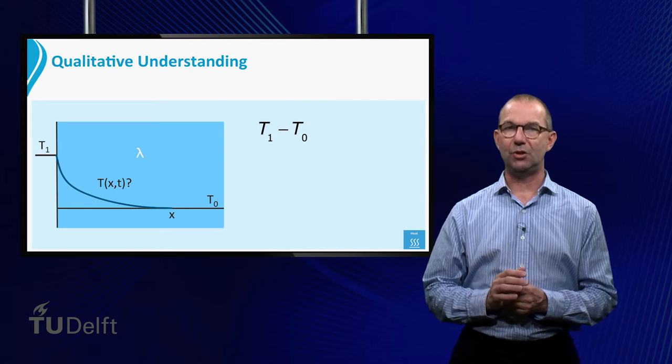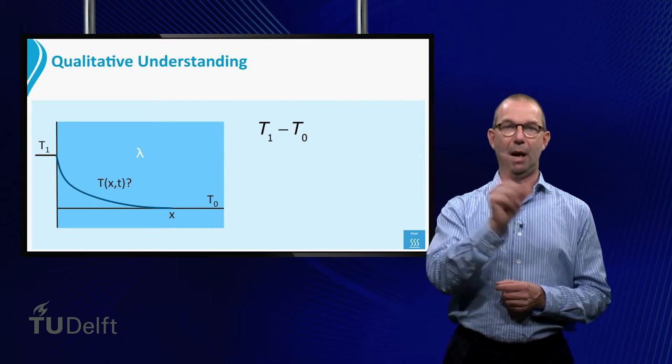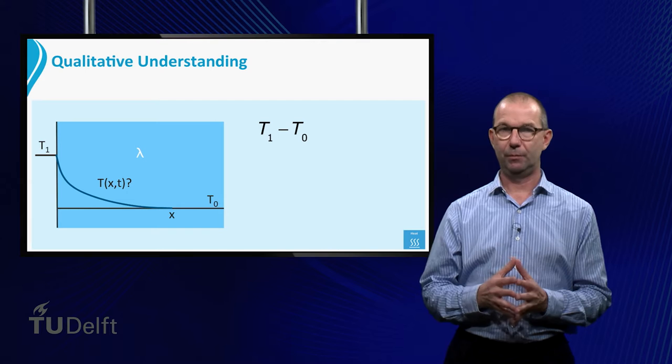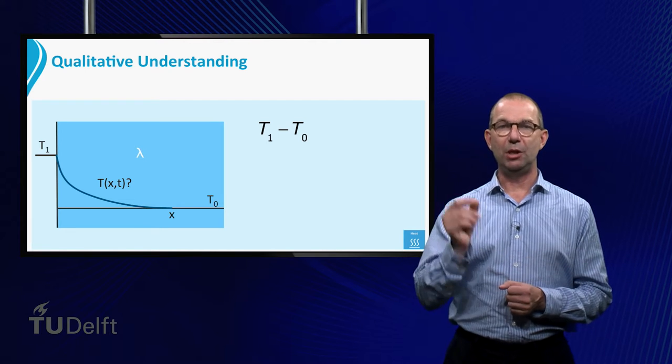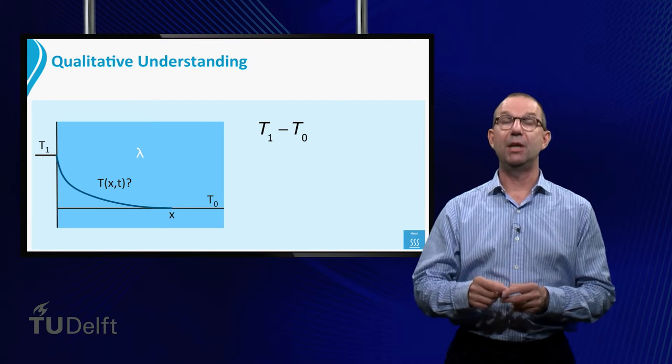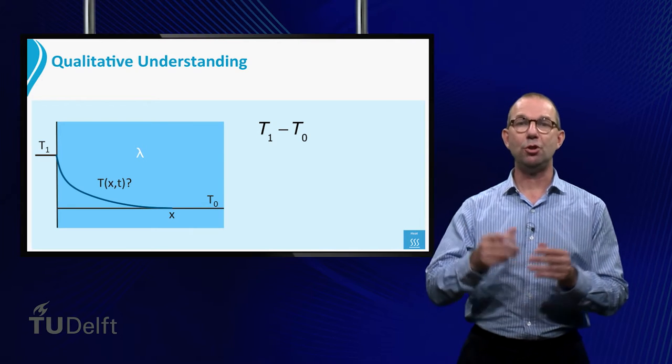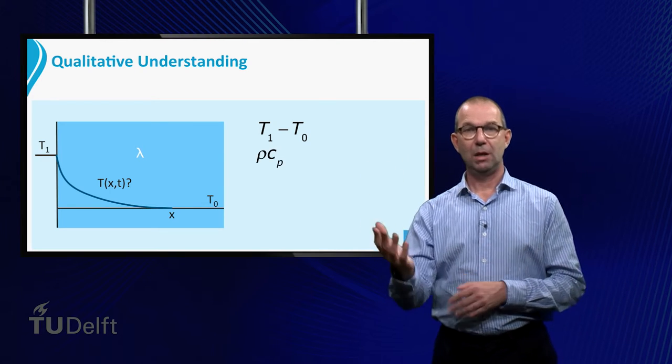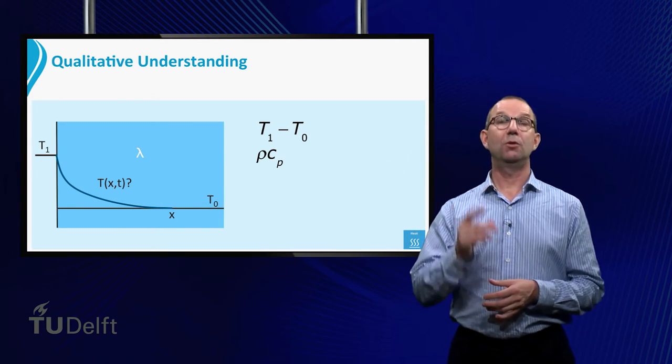Obviously, the driving temperature difference T1 minus T0 plays a role. From the heat balance we know that the thermal energy plays a crucial role, thus we can expect rho times Cp of the strip to be important.